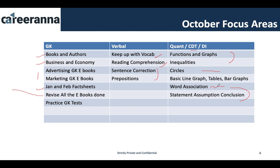In your MICAT coaching course, two topic-wise tests on word association are provided. For Data Interpretation, practice line graphs, tables, and bar graphs, but do not go for very complicated or CAT-level questions — the DI part in MICAT is easy. Practice only level one difficulty questions from Arun Sharma or Nishit book, whichever you are using.